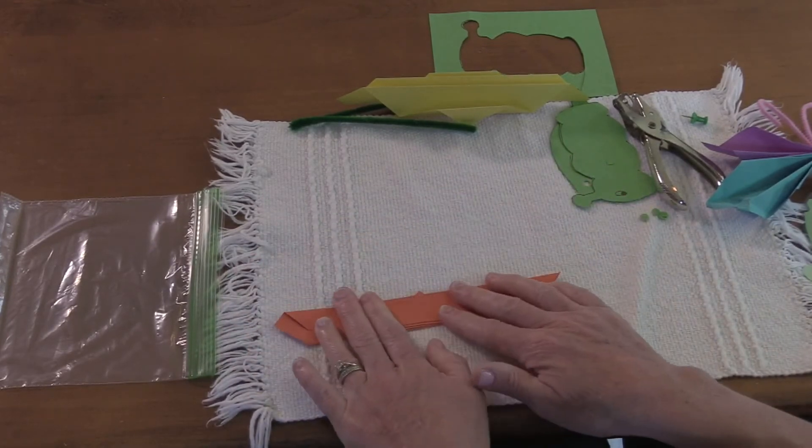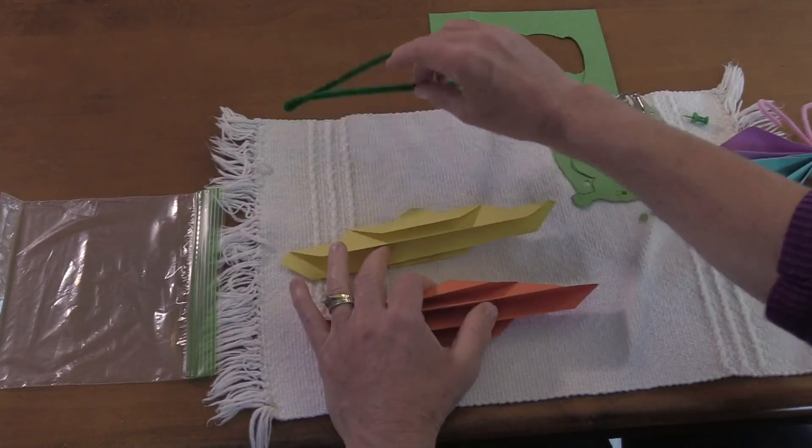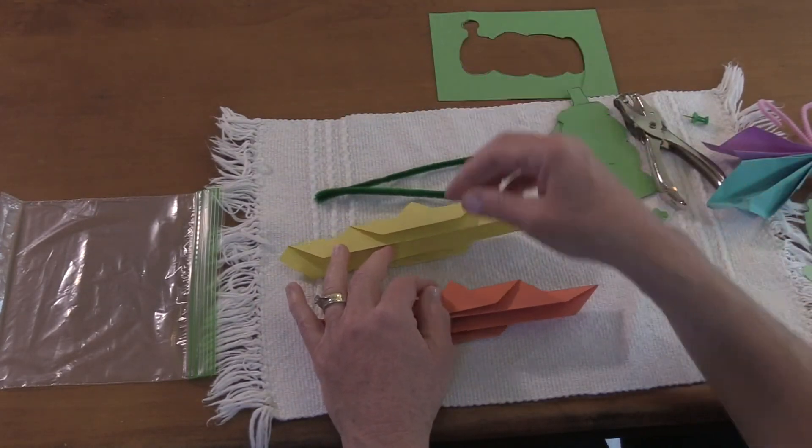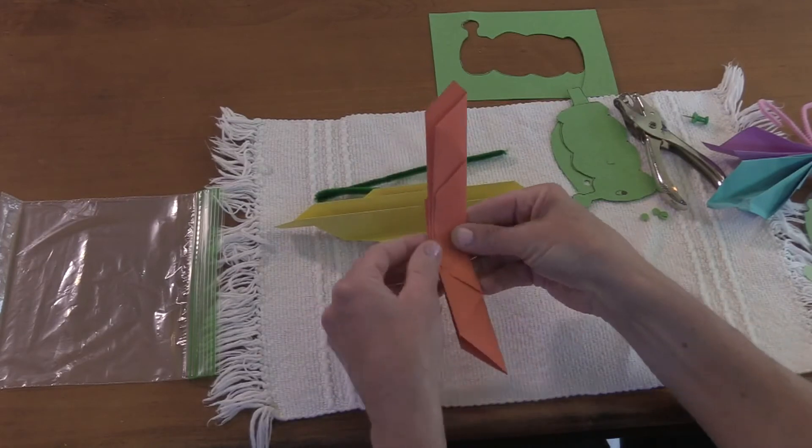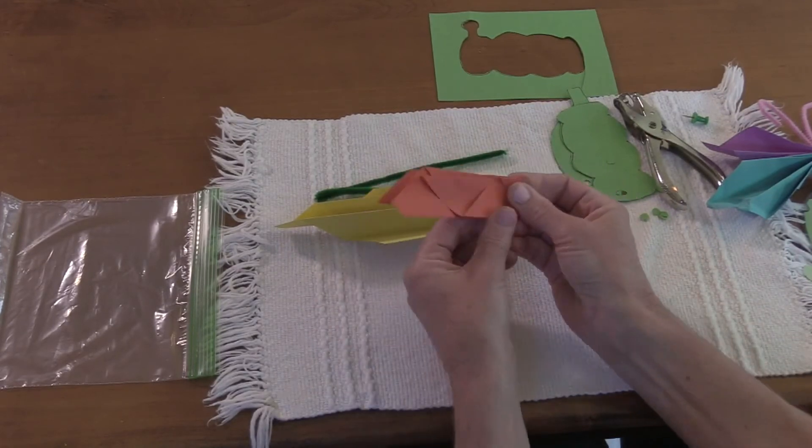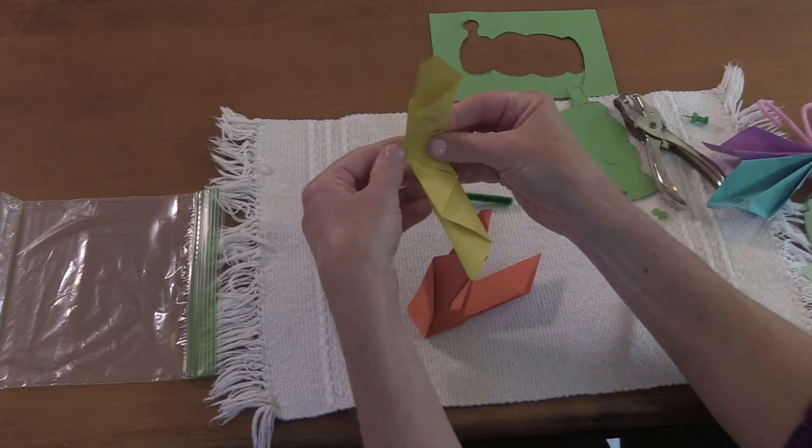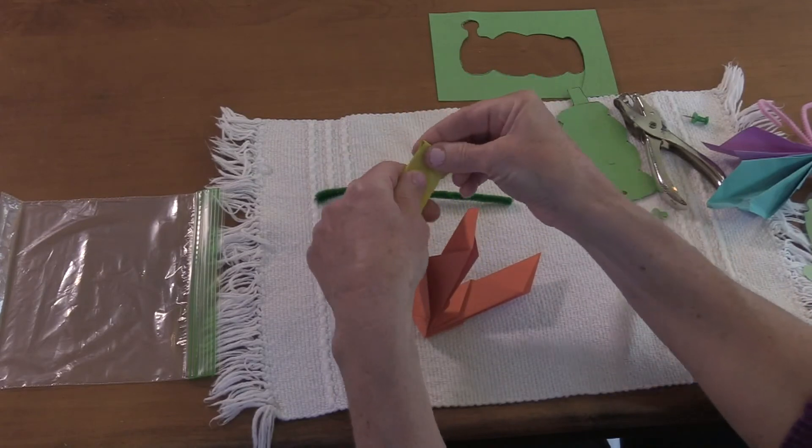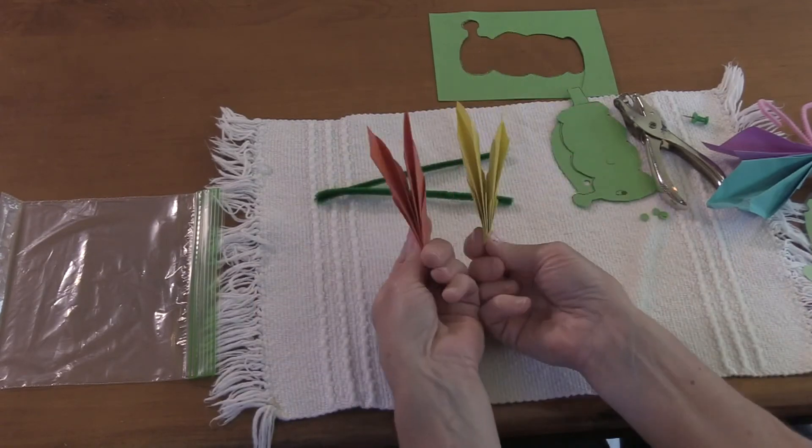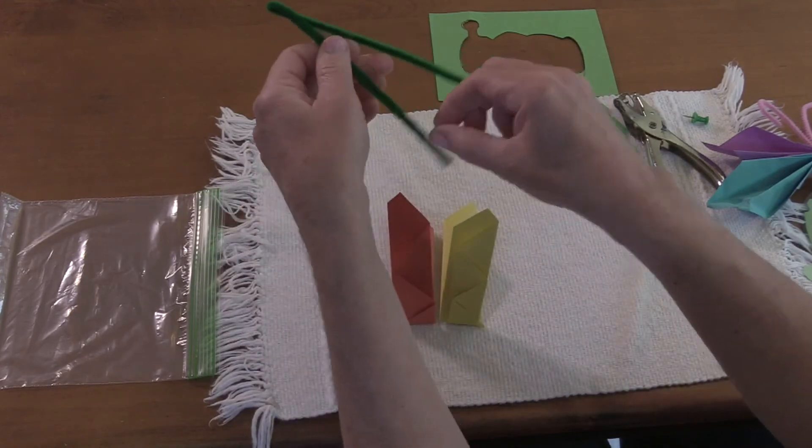Now I have two wings and my antennas. Now I'm going to fold the wing in half like that. Fold the other wing in half, so my two wings look like this.